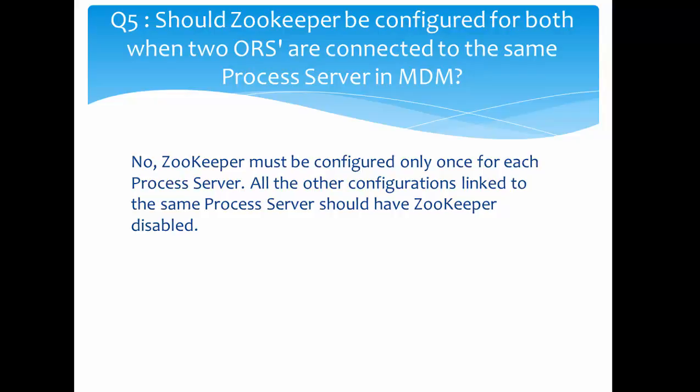The next question is: should Zookeeper be configured for each ORS when both ORS are connected to the same process server in MDM Hub? No — if multiple ORS are configured in the MDM Hub and they are using the same process server, there is no need to configure Zookeeper on each one. Zookeeper must be configured only once per process server; all other configurations linked to the same process server should have Zookeeper disabled. This is important when configuring MDM Hub in a cluster.